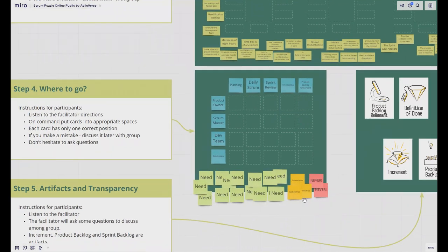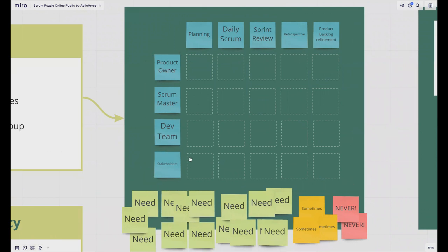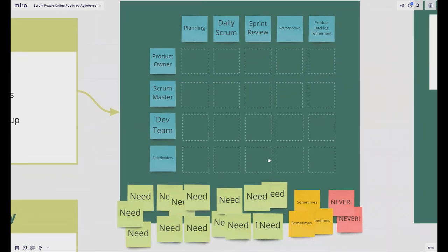Where to go? If you have any role, you should know at what event you should visit. As you can see, at rows we have roles, for example product owner, scrum master, dev team, and stakeholders. At columns you have events: planning, daily scrum, sprint review, retrospective, and product backlog refinement, which is not officially a Scrum event. Below this table, we have a lot of green cards, some yellow cards, and a few pink cards. You should ask people to put these cards in the appropriate places.